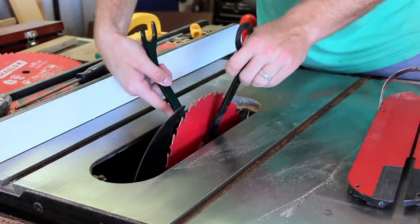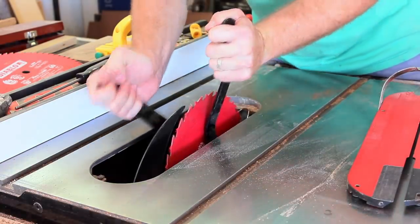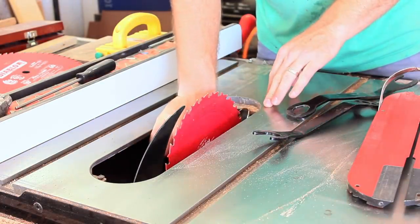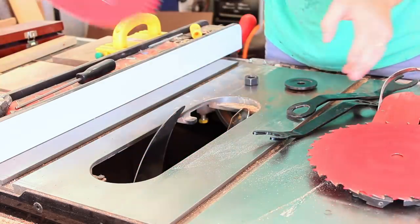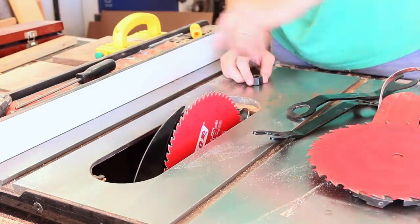I like to use dedicated ripping and crosscut blades, especially on a piece like this where you have such a dense exotic wood. The crosscut blade with the higher tooth count gives you a glass-like finish.